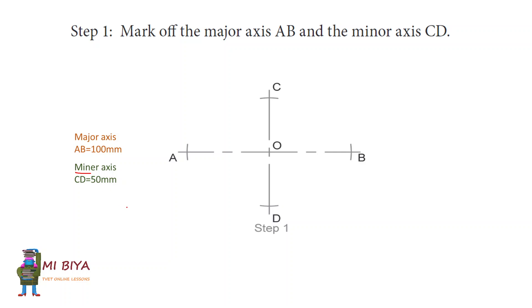Please forgive me with the spelling of minor. We've got the minor X, which is CD, and the dimension is 50 millimeters. C to D covers 50 millimeters, meaning here it's 25 and here is 25, which makes 50. So we are done with Step 1. We've got CD as the minor axis and AB as the major axis.